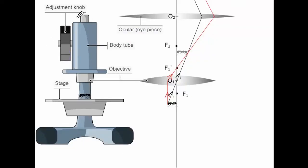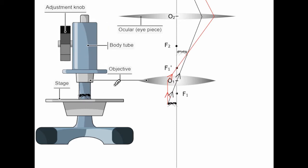This image represents a compound microscope and these are its parts. You might have used these compound microscopes in a biology lab to observe specimens, minute objects, and to study some leaves, plants, or flowers.